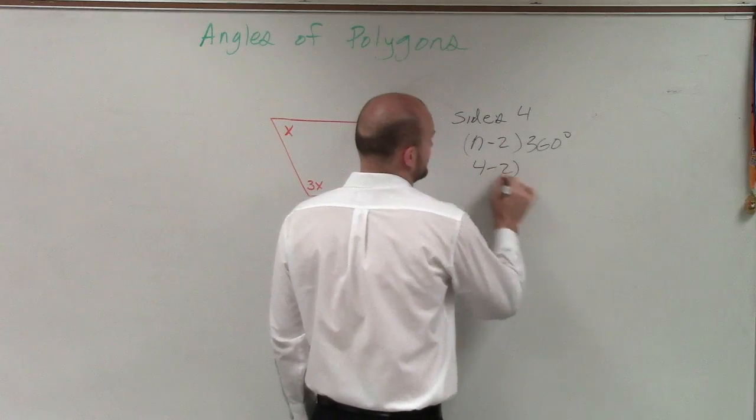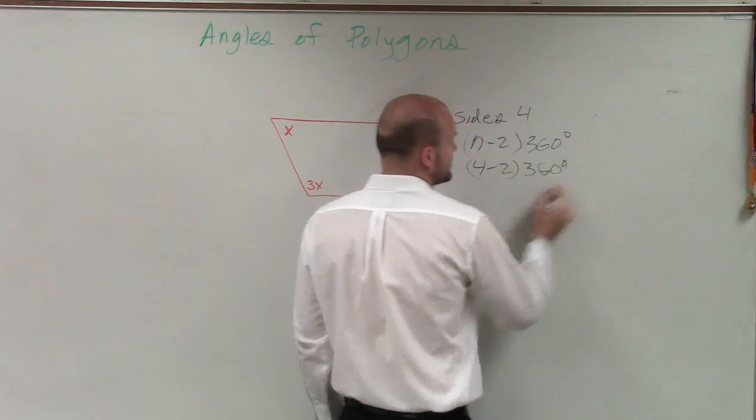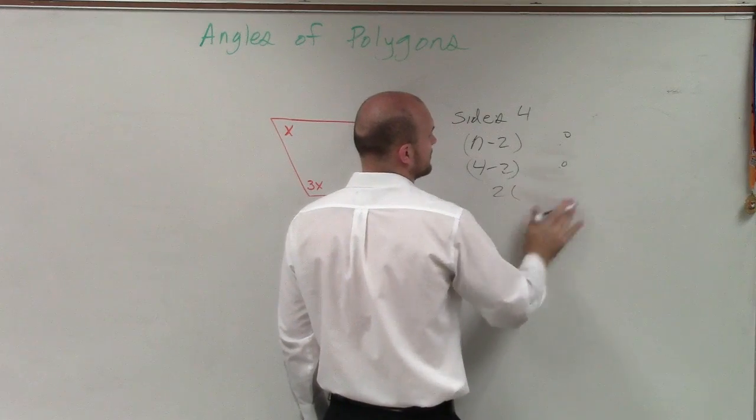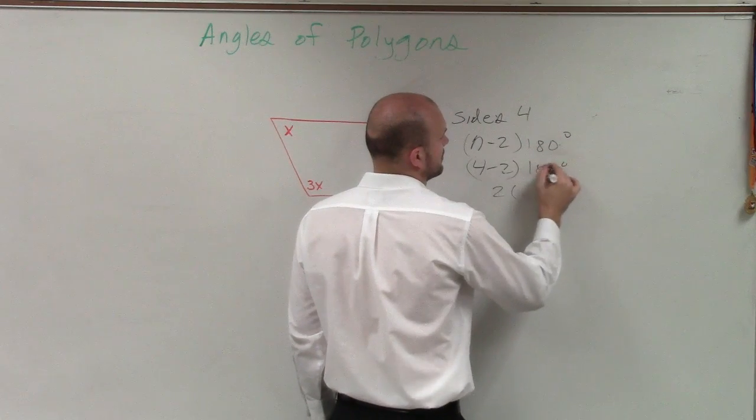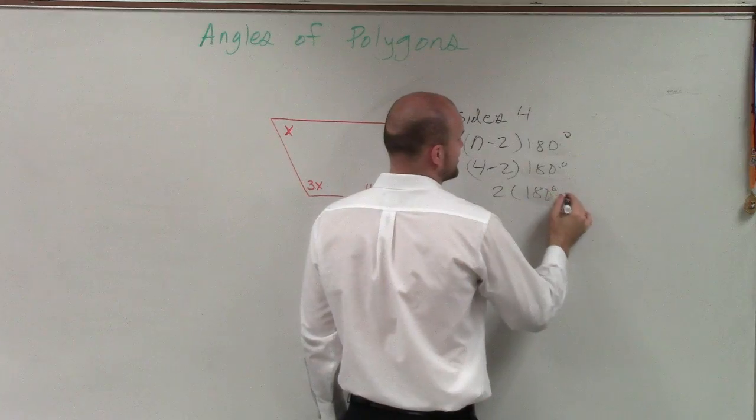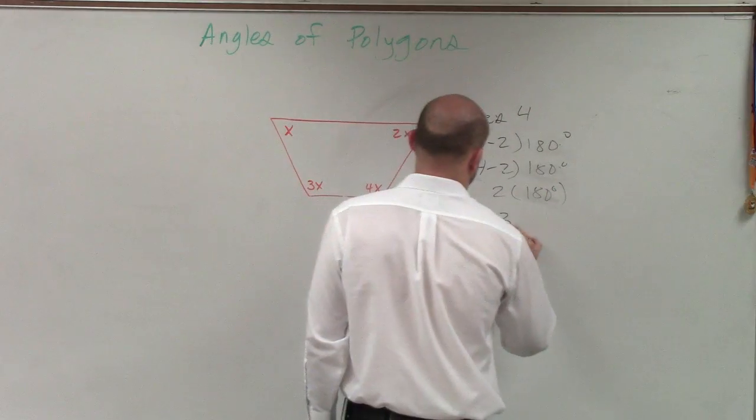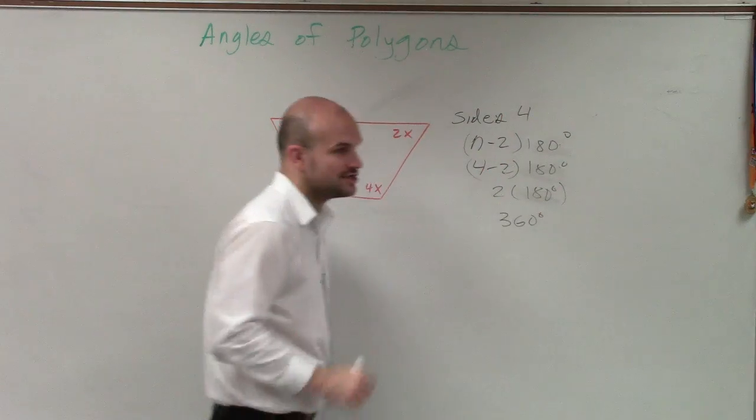So 4 minus 2 times 360 degrees is 2 times 3, oh, I'm sorry, 180. What am I doing? I was just getting the answer in my head. So 2 times 180 is going to be 360 degrees.